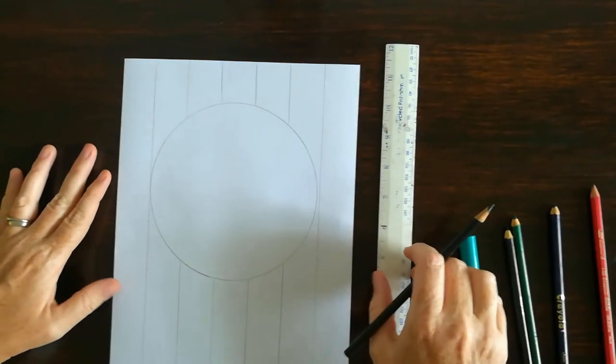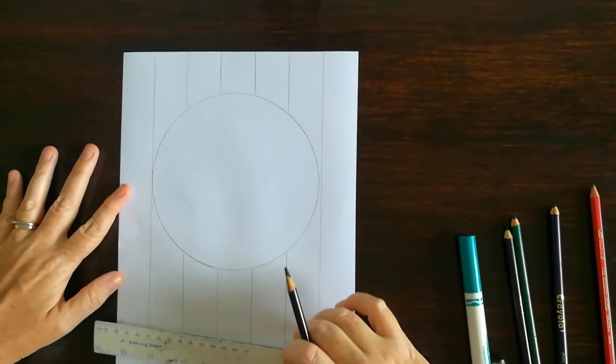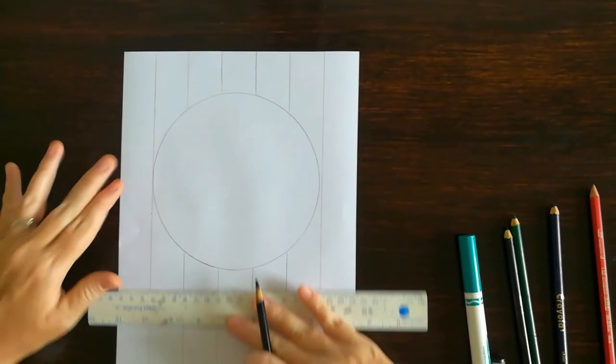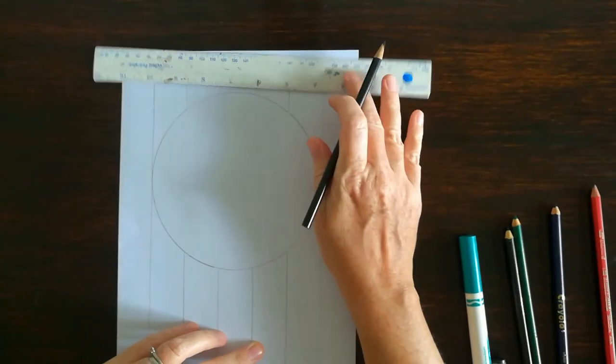Alright, now I'm going to make my horizontal lines and I'm going to do the exact same thing all the way up, skipping my circle also.